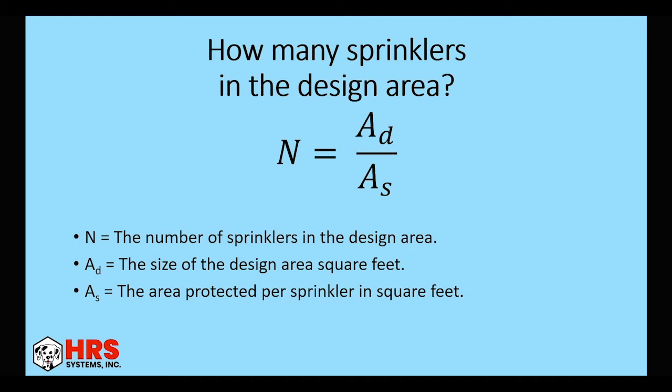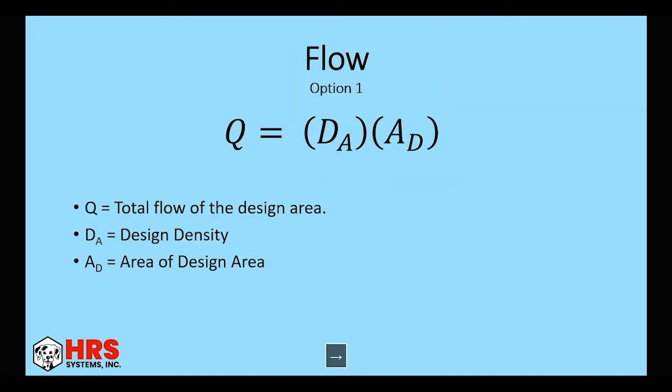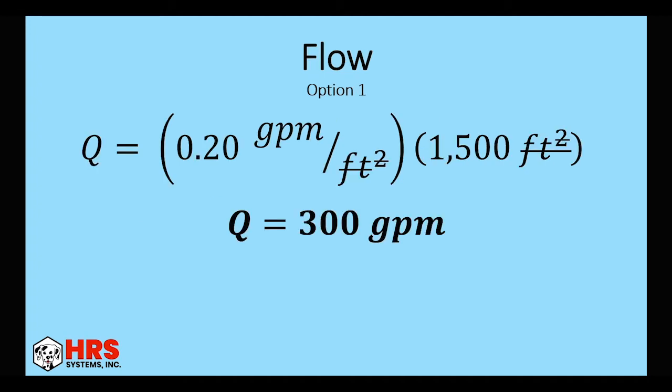So we quickly calculate how many sprinklers will be needed by taking the size of the design area over the protected area per sprinkler. So 1500 square feet divided by 120 square feet per sprinkler. That gives us 12.5 sprinklers or 13 sprinklers since you can't have half a sprinkler. Then we want to get the total flow for the design area. Again, we're not designing the system. We're just trying to figure out if we need a pump real quick. So we take our density over the coverage area. So 0.2 times 1500 square feet. That gives us a flow approximately of 300 GPM for the coverage area. Obviously, again, this is just an estimate.